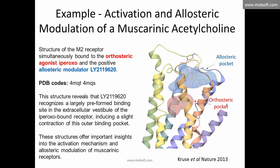We're going to work on an example — the muscarinic acetylcholine receptor. It's a G-protein coupled receptor with seven transmembrane helices. This structure is interesting because it has not only an orthosteric ligand bound but also an allosteric ligand bound: an orthosteric agonist and a positive allosteric modulator shown in blue. The first PDB code we're going to read is 4MQT, and the structure reveals that the allosteric ligand recognizes a largely preformed binding site in the extracellular region of the receptor, inducing a slight contraction of the outer binding pocket. These structures offer important insights into the activation mechanism and allosteric modulation of muscarinic receptors.